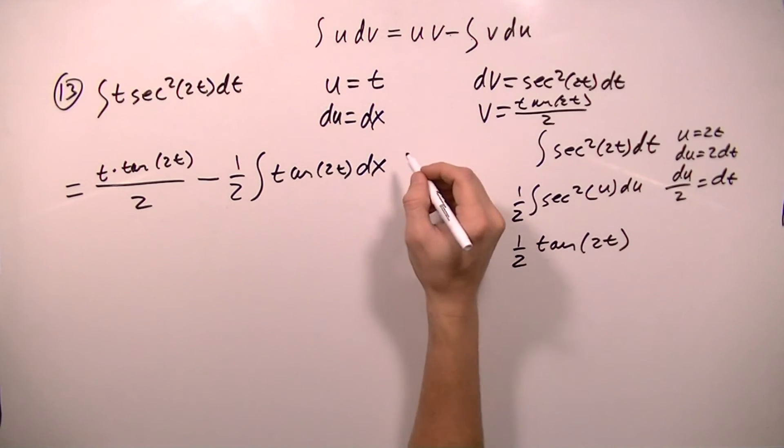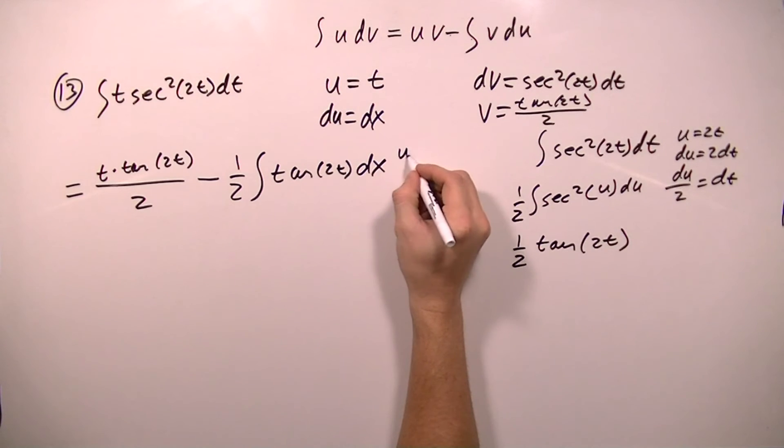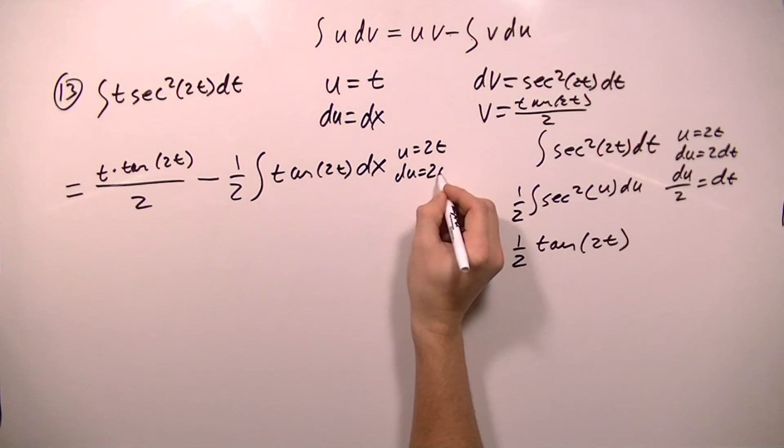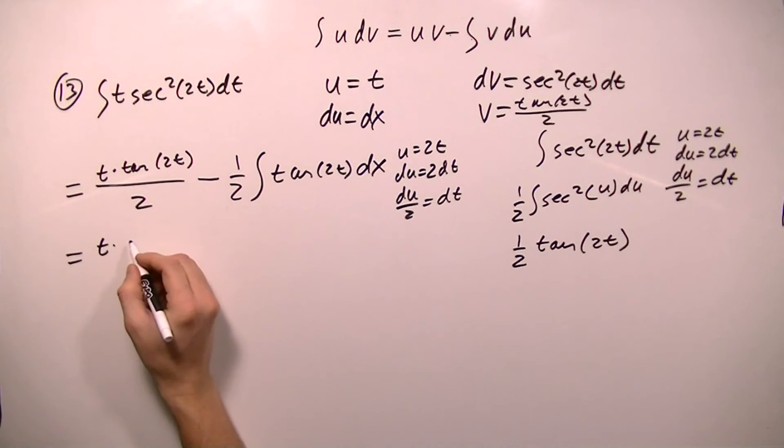So in order to integrate this, I'm going to have to make a substitution, and I'm going to say that u equals 2t. So that du equals 2 dt, and I'll divide both sides by 2, and I get du over 2 equals dt.